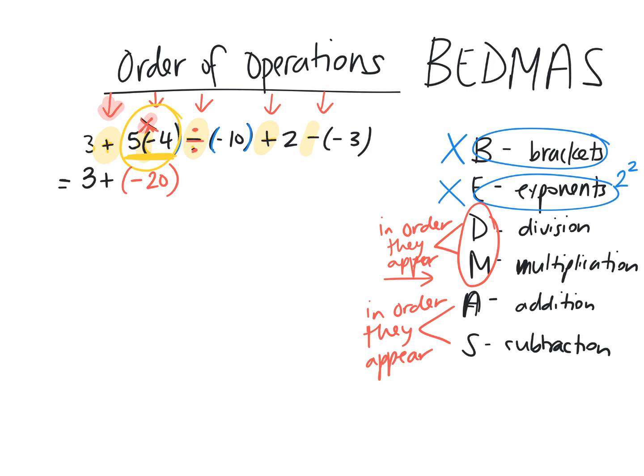See what I did there? Now what? I'm just going to rewrite everything, so we can break it down. Divided by negative 10 plus 2, take away negative 3. So I've simplified one thing now. So now I have addition, division, addition, and subtraction. I've already done multiplication.